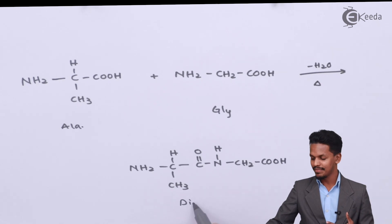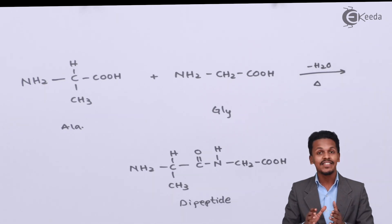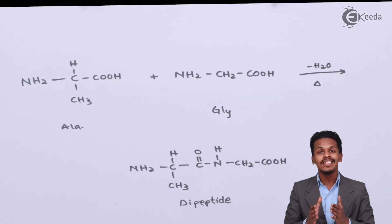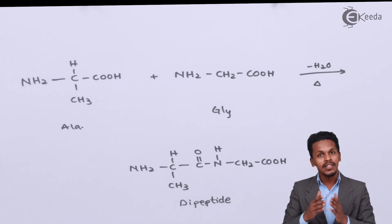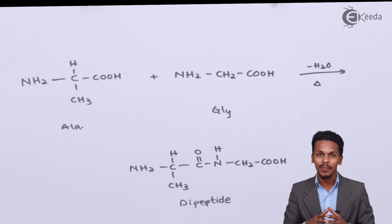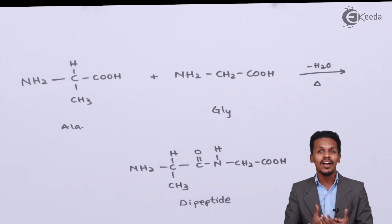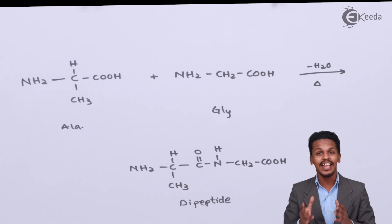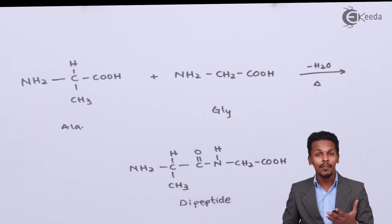So here we have got a dipeptide, but this dipeptide is different from the previous one. Whenever alanine is combined with glycine, or glycine is combined with alanine, we get different dipeptides. This is similar to how DNA follows such a rule — the sequence in which nucleotides are arranged makes each individual's DNA unique, which is why no two people's DNA can be the same.